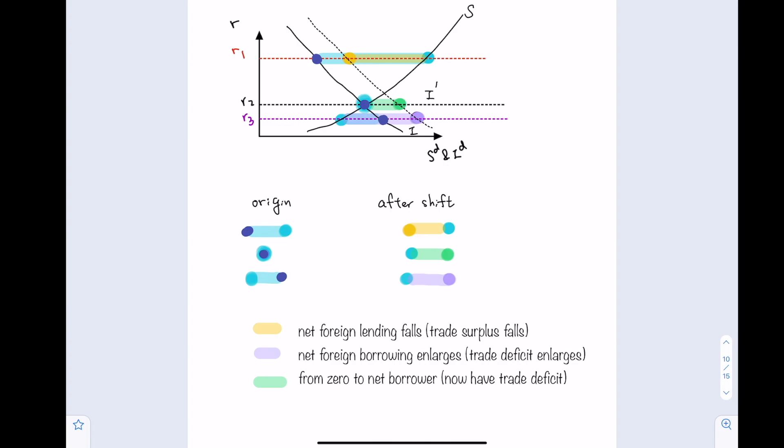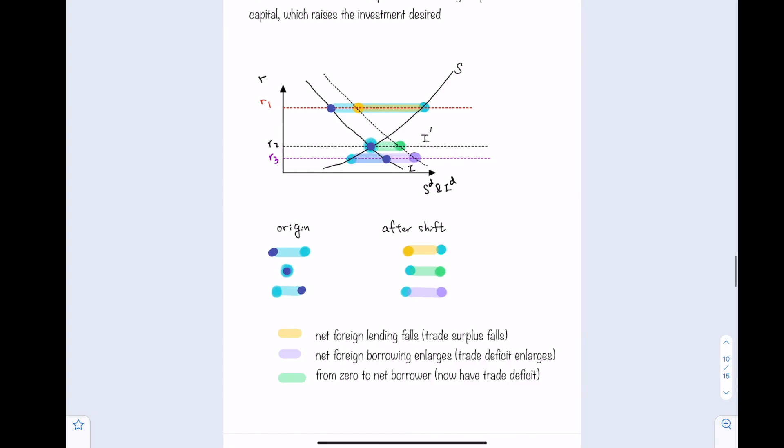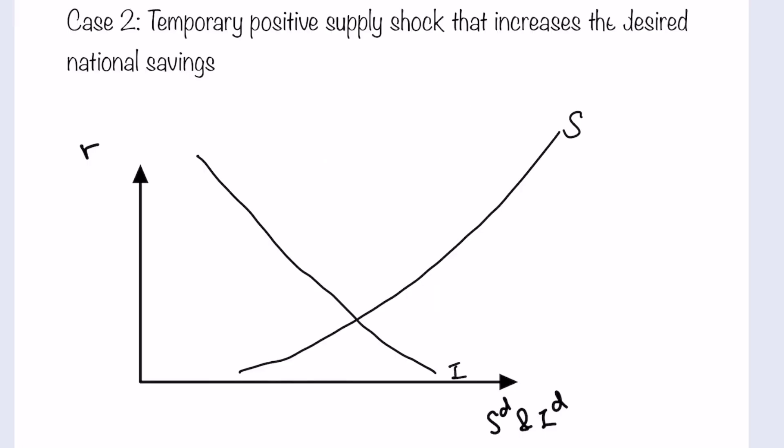For an economy that had a foreign borrowing position, its foreign borrowing size will enlarge, meaning its trade deficit grows. Finally, for an economy that previously had zero trade balance and zero lending and borrowing, it moves from zero to net borrowing, developing a trade deficit. That is the impact of an increase in desired investment for a small open economy.